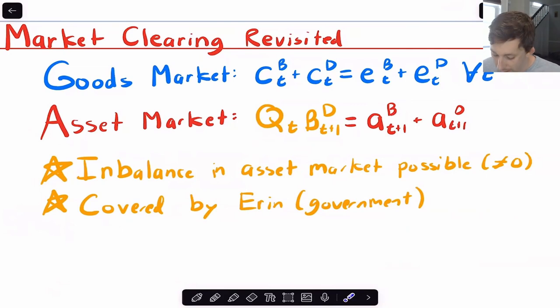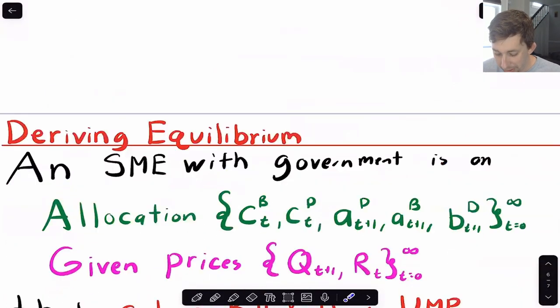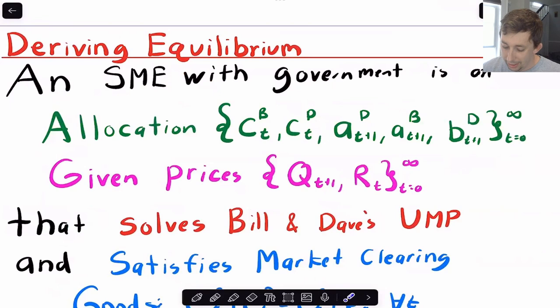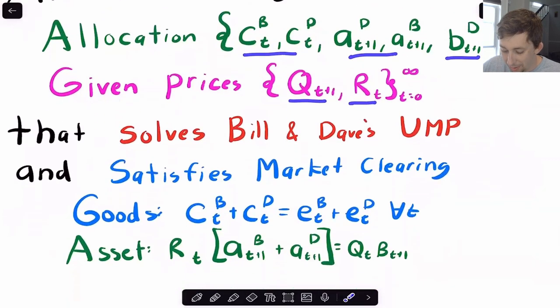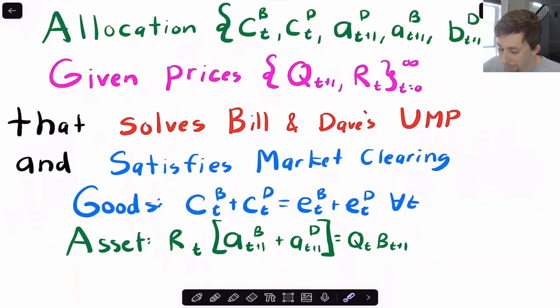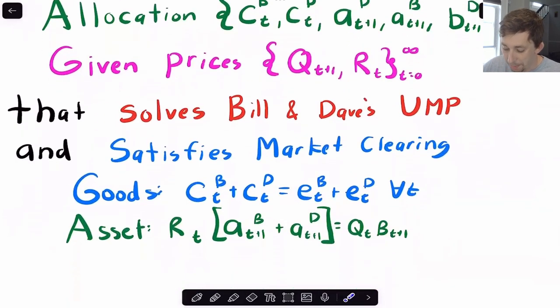And that's basically how that's going to work. Now, we can keep going. We can derive this equilibrium. Again, it's a competitive equilibrium. It's going to be an allocation given prices, solving maximization problems subject to market clearing. And so we see the same thing here. It's an allocation, consumption, assets, government bonds going to Dave. Given the prices of both bonds and assets, it's going to solve Bill and Dave's utility maximization problem. And it's going to satisfy both the goods market and the asset market in every single period.